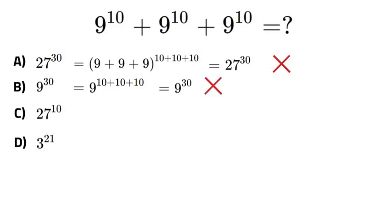So now we got this other option down here. We got C, 27 to the power of 10 which will be rewritten as 9 plus 9 plus 9 all to the power of 10 which again looking up above is not the same thing. It'll leave us at 27 to the power of 10 which is wrong.